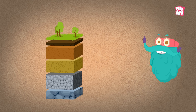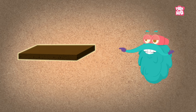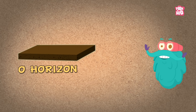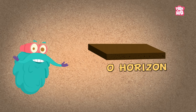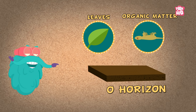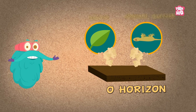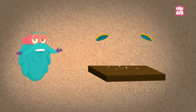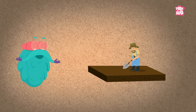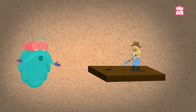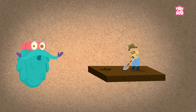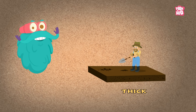The one on which we stand is called the O-Horizon. This is the topmost layer, where the leaves and organic matter decompose and form the humus. This tells us how fertile the soil can be. Based on the soil type, it may be thick,